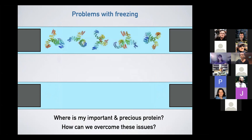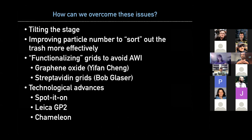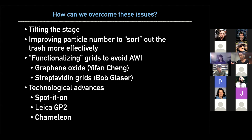So how can we overcome these issues? During the Q&A, I would love to prepare you for how to overcome any of these issues. I have additional slides on what I've seen people do, such as tilting the stage, improving your processing pipeline downstream, but mainly functionalizing the grids, playing around with different detergents, and different technological advances such as Spotiton, Chameleon, GP2, and a myriad of other approaches. I'll leave this portion to the Q&A, and hopefully I've gotten you excited about the discussion portion. With that, I would like to pass the torch to Will.